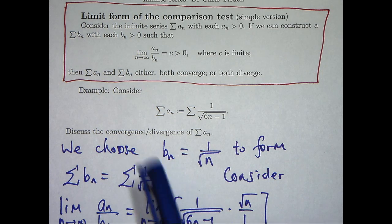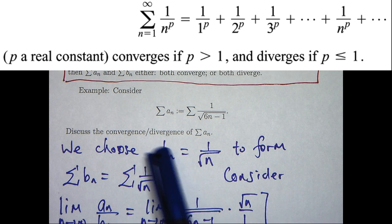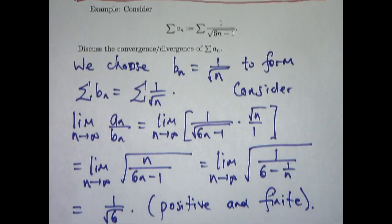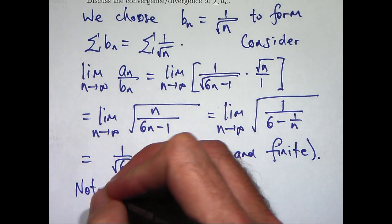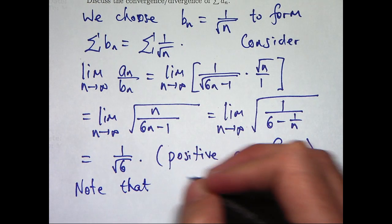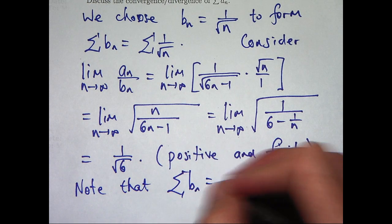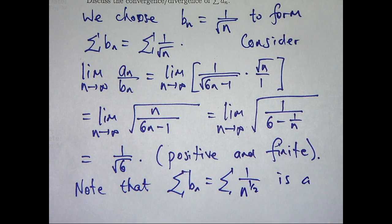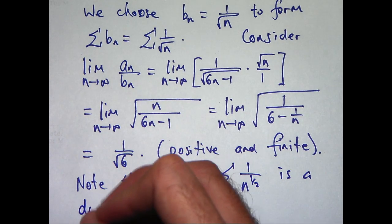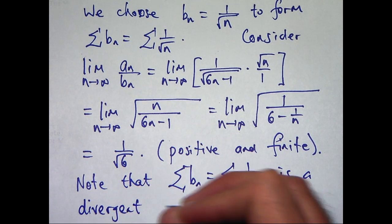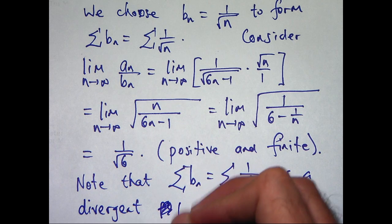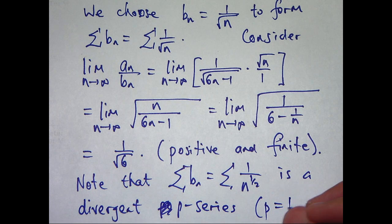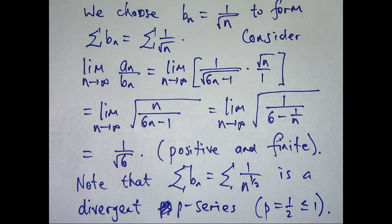Well, this is a p-series with power equal to 1/2 and it is divergent because the power is less than or equal to 1. So we know that this is a divergent p-series with p equal to 1/2 which is less than or equal to 1.